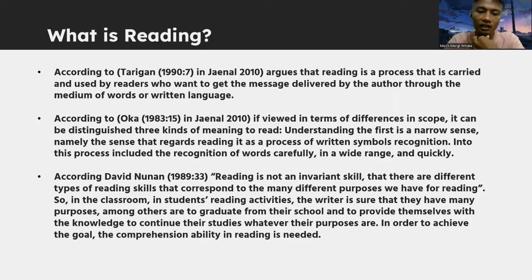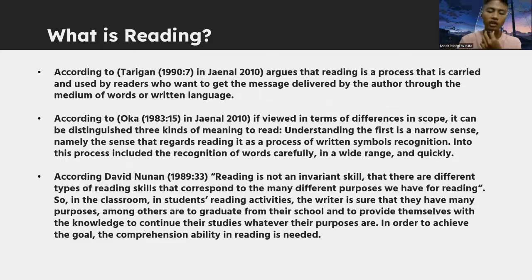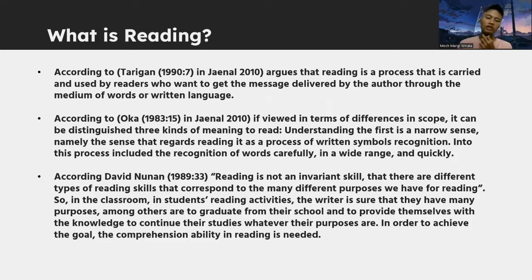According to Oka, if viewed in terms of differences in scope, one can distinguish three kinds of meaning to read. The first is a narrow sense, namely the sense that regards reading as a process of written symbols recognition. Into this process is included the recognition of words carefully, in a wide range, and quickly.